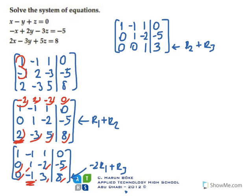Now we have the row echelon form — the triangular form. What we have to do next is get rid of these entries: minus two, one, and minus one. They will all become zeros.